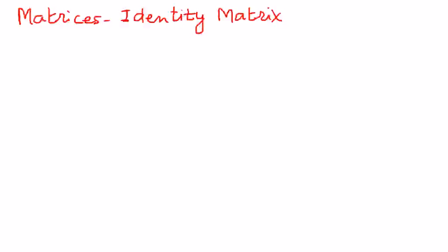What is an identity matrix? To answer that, we want to say that in any square matrix, when the main diagonals have 1s and 0s elsewhere, those types of matrices are called an identity matrix.